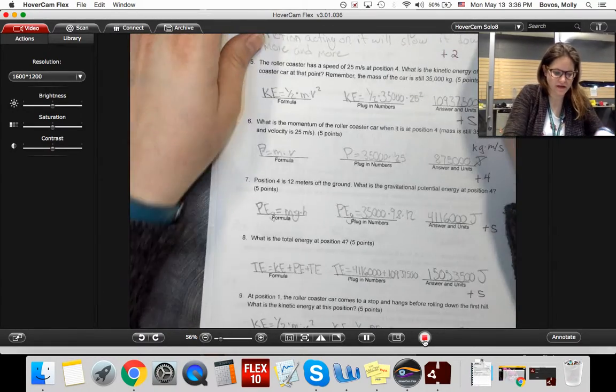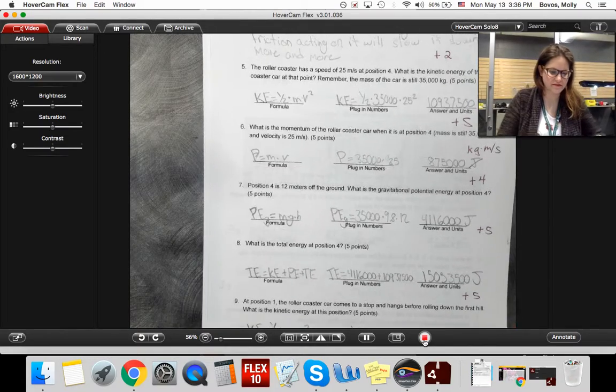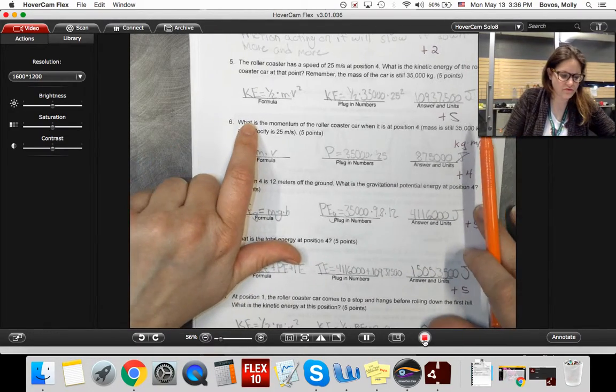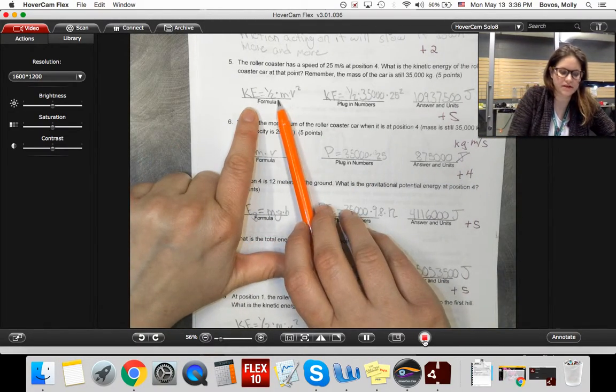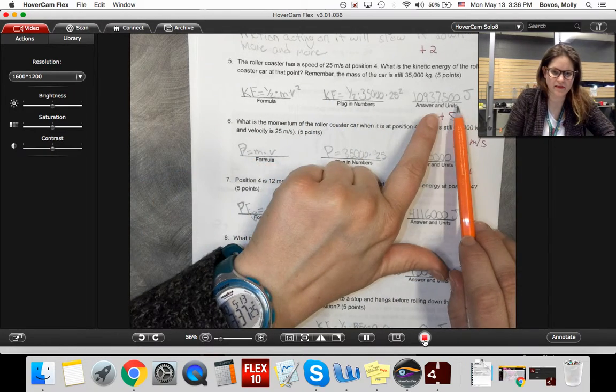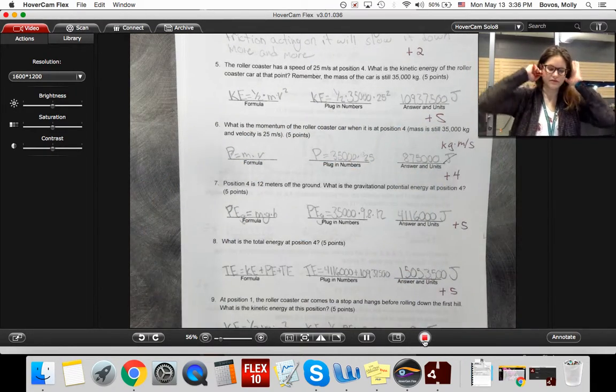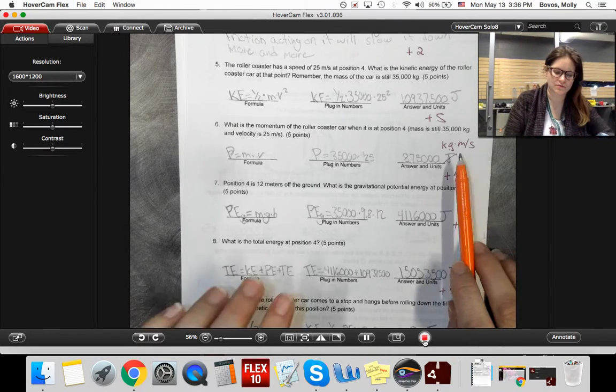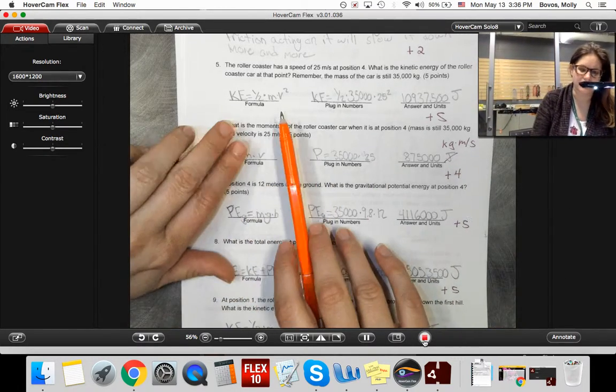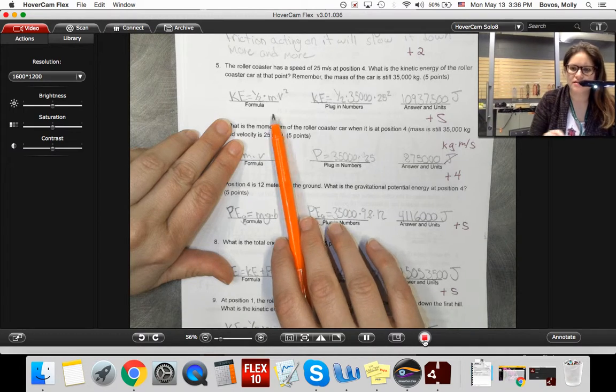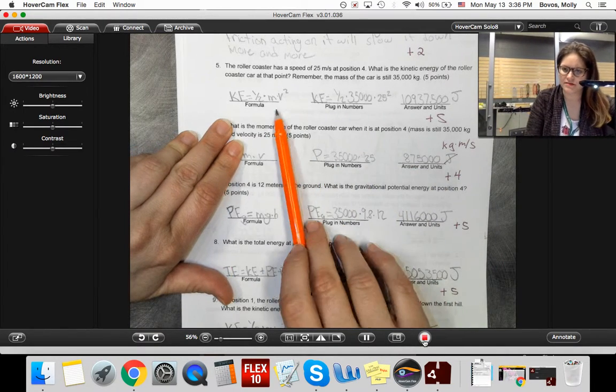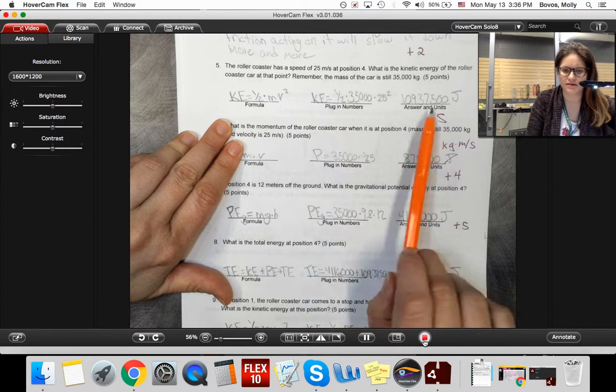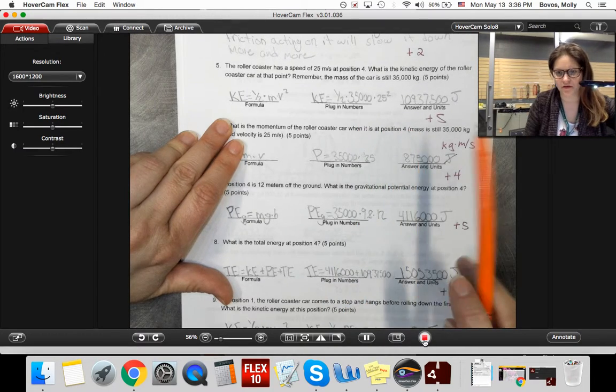Looking at these calculations, what I'm looking for on each of them is the formula, plugging in the numbers, and then our final answer with the units. If you missed units, then you just missed one of those points. If you put down the wrong equation, then you may have missed a couple points, because then you would have done the problem incorrectly.